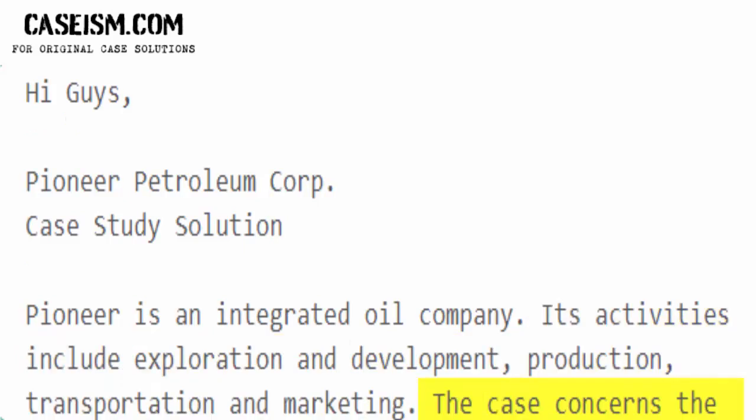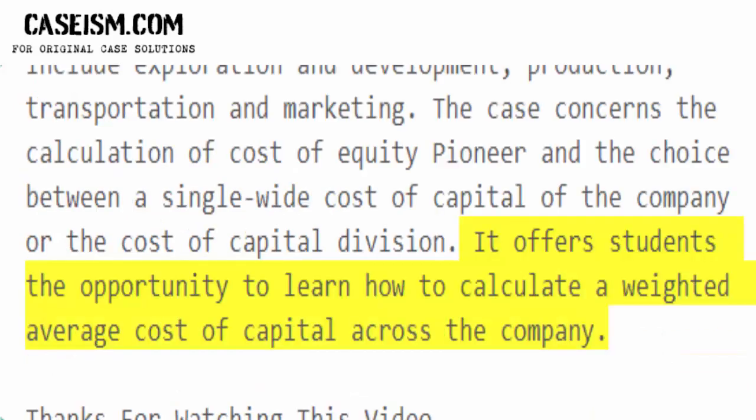The case concerns the calculation of cost of equity for Pioneer and the choice between a single company-wide cost of capital or the cost of capital by division. It offers students the opportunity to learn how to calculate a weighted average cost of capital across the company.